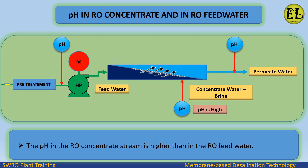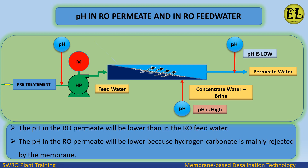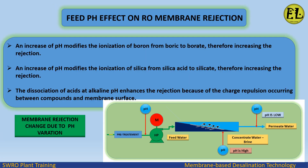pH in RO: the pH in the RO concentrate stream is higher than in the RO feed water. Regarding pH in RO permeate versus RO feed water, the pH in the RO permeate will be lower than in the RO feed water, because hydrogen carbonate is mainly rejected by the membrane.